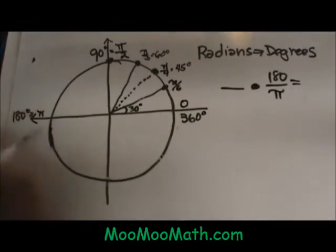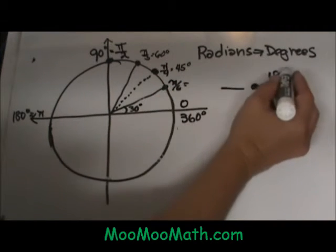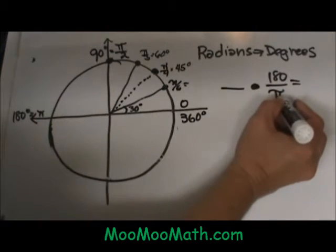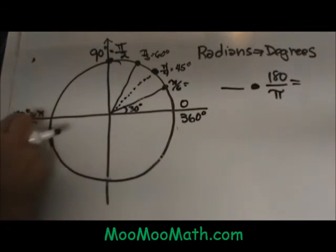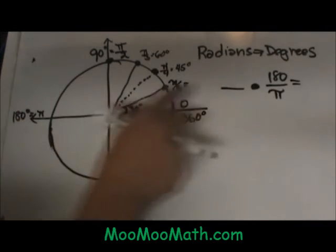We are going to take the radian measure and multiply it by 180 over π. That is the number one just in a different form. Notice that 180 and π are equal to each other. We are just converting radians to degrees.